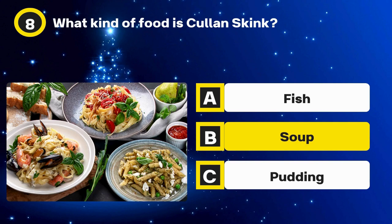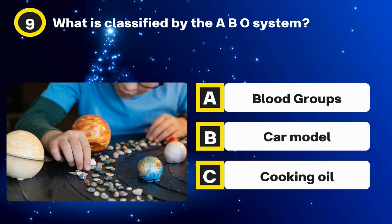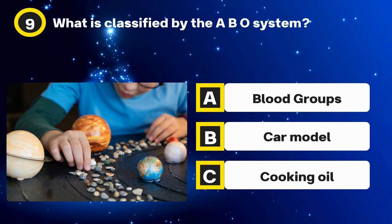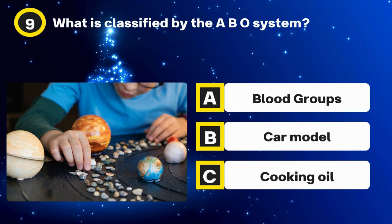Question 9. What is classified by the A, B, O system? Options: Blood groups, Car model, Cooking oil. The answer: Blood groups.